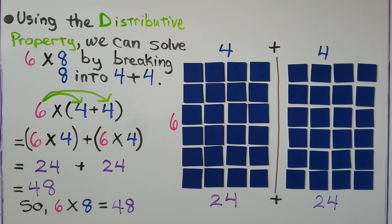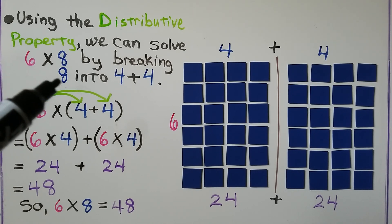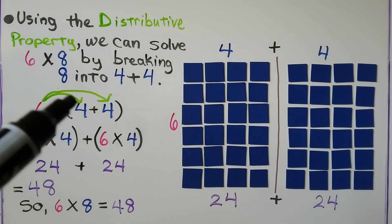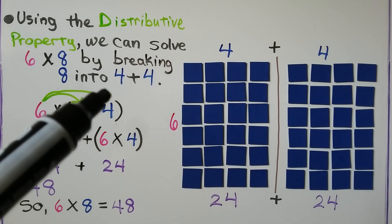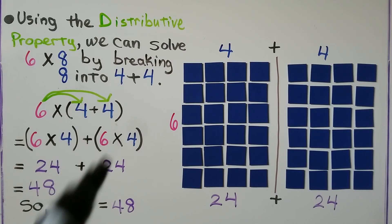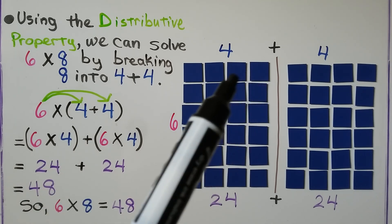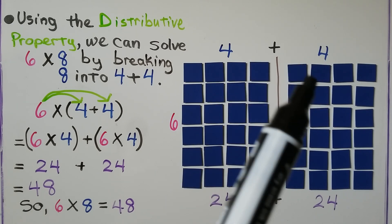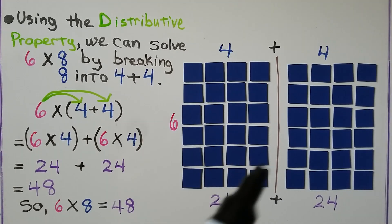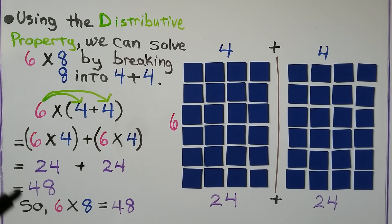Using the distributive property, we can solve 6 times 8 by breaking the 8 into a 4 plus 4. Now we have 6 times (4 plus 4). We distribute the 6 to the 4 plus this 6 to that 4, giving 6 times 4 plus 6 times 4. That's 24 plus 24. We add the products: 24 plus 24 is equal to 48. So 6 times 8 is equal to 48. 8 is an even number, so we could break it into 4 plus 4 as doubles.